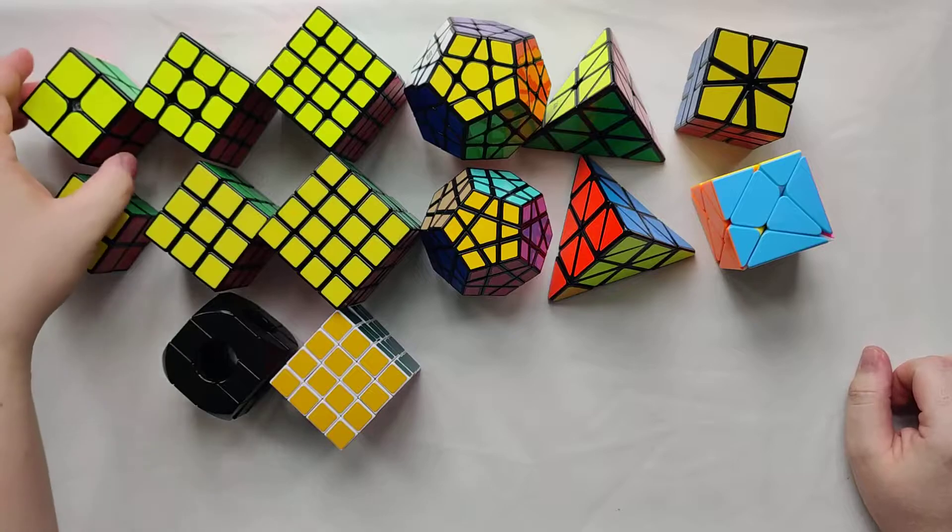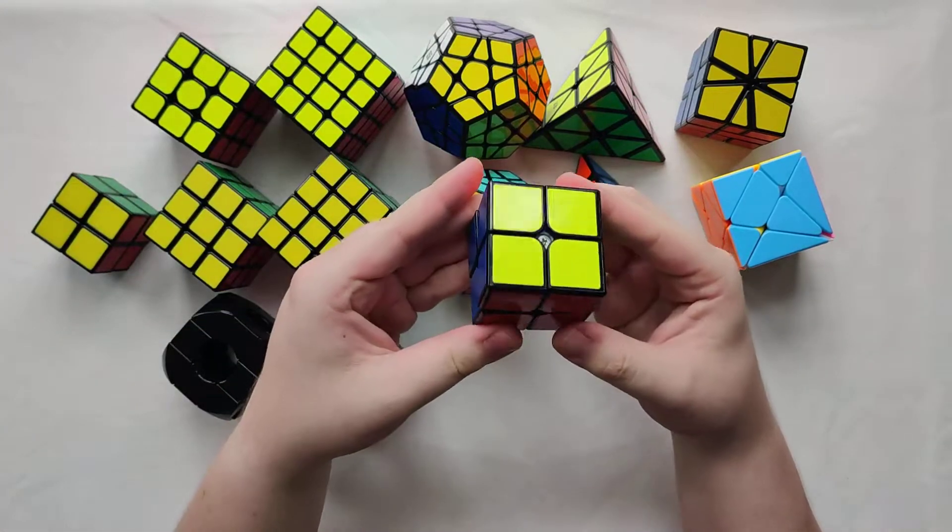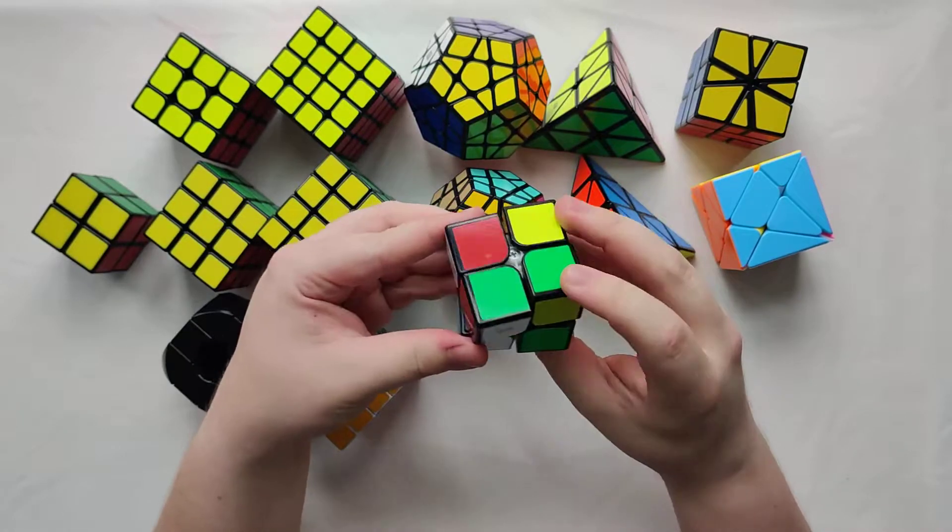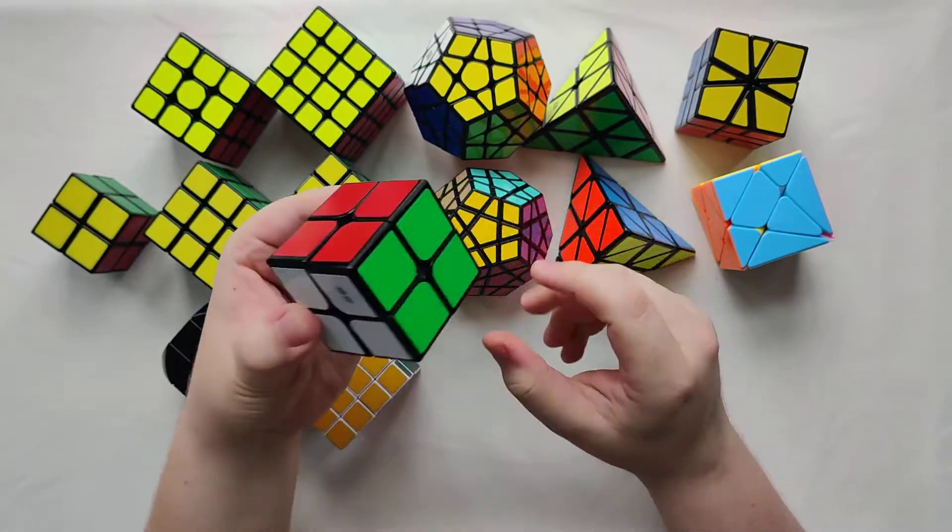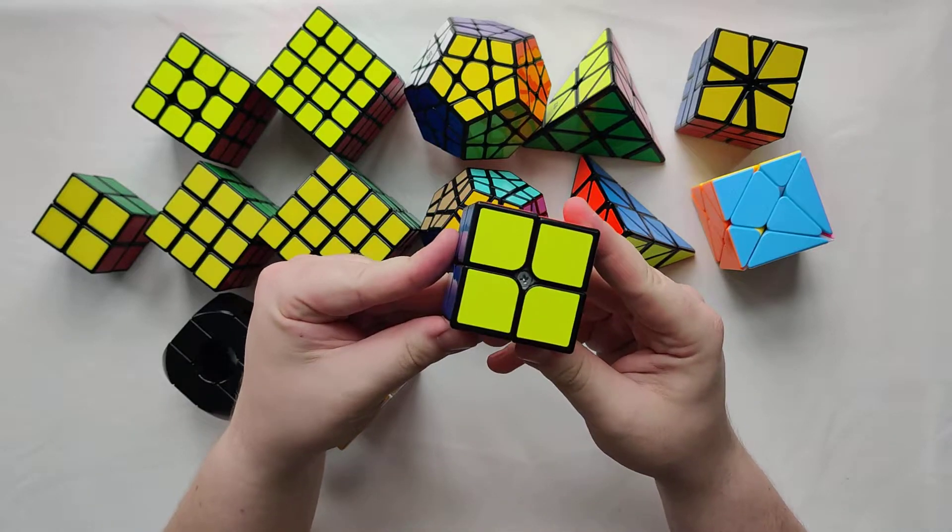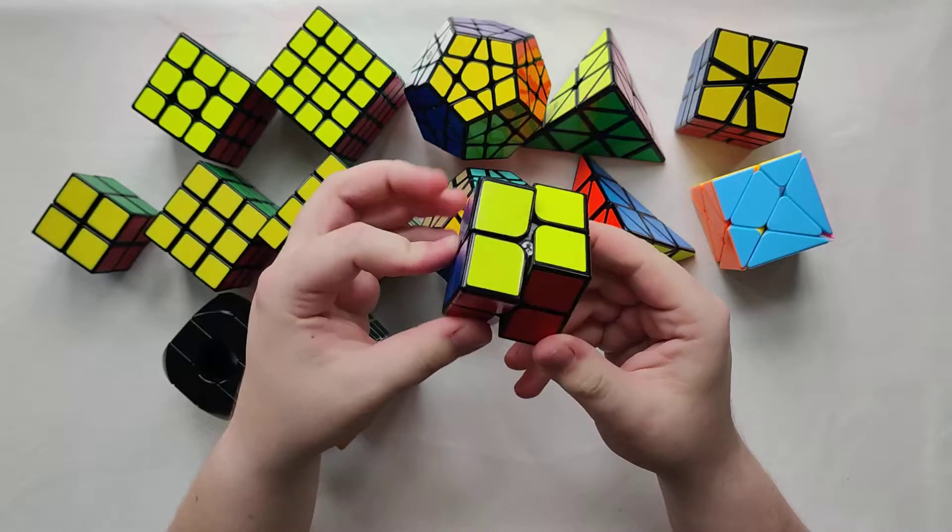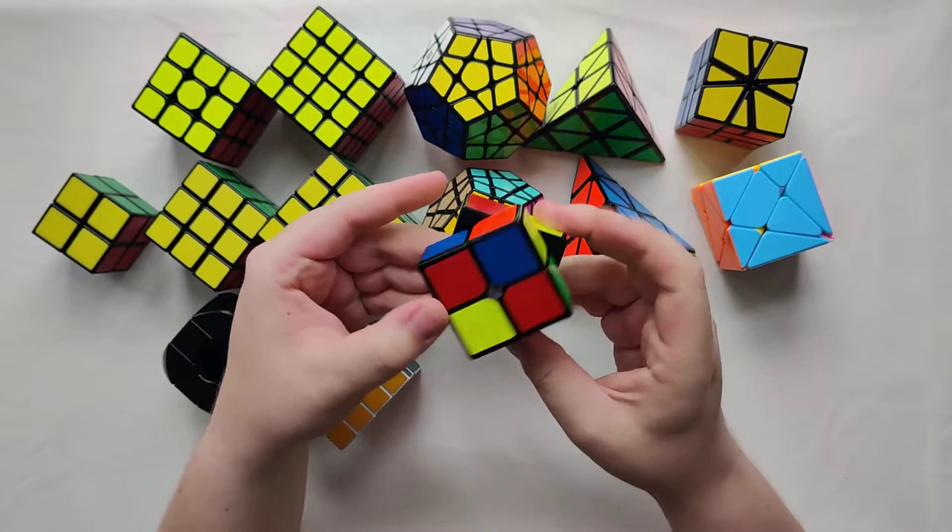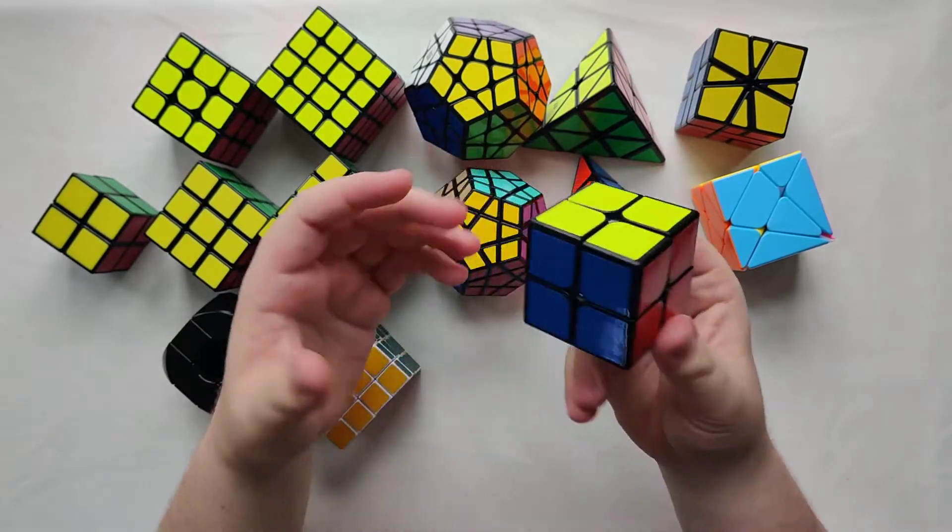So we'll start off with this one. This is a Qi Yi 2x2. I'm not sure exactly of the model but this was part of my Reddit Secret Santa gift. So thank you very much my Santa. This is a very good 2x2 and definitely turns well. It's a 2x2.